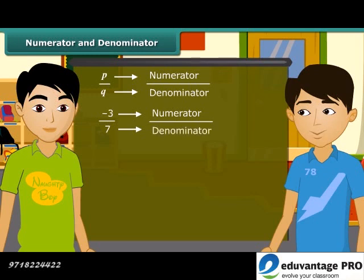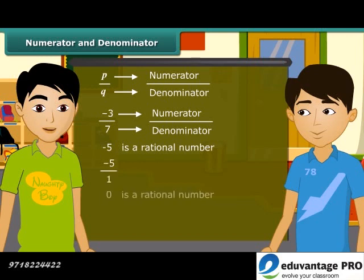Amit, are integers also rational numbers? Yes. For example, the integer minus 5 is a rational number because you can write it as minus 5 by 1. Similarly, the integer 0 is a rational number because 0 can also be written as 0 by 2 or 0 by 7, etc.